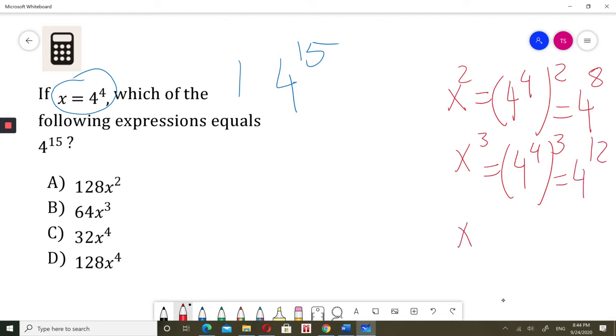What about x to the power of 4? x is 4 to the power of 4. And then, to the power of 4, that would be 4 to the power of 16.